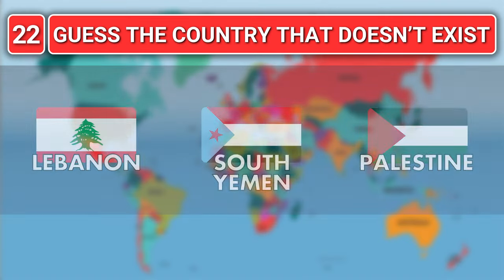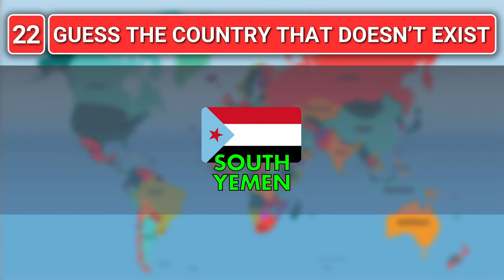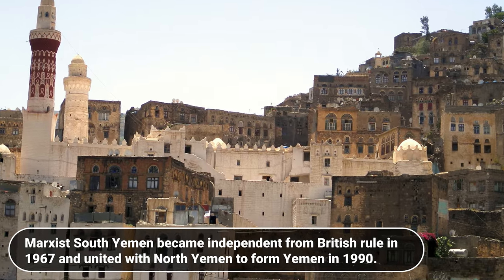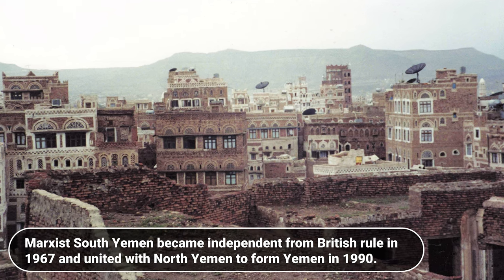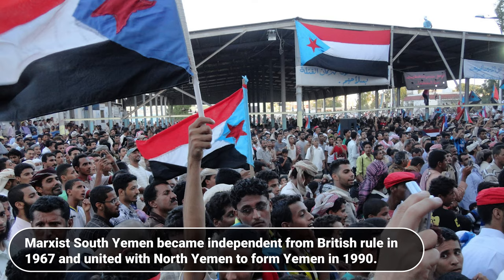Guess the country that doesn't exist? Lebanon, South Yemen or Palestine? The answer is South Yemen. Marxist South Yemen became independent from British rule in 1967 and united with North Yemen to form Yemen in 1990.